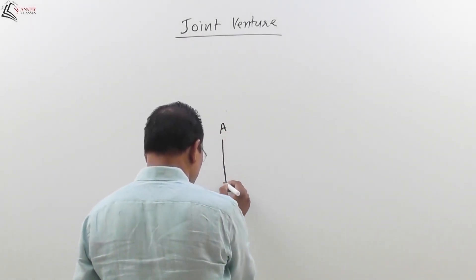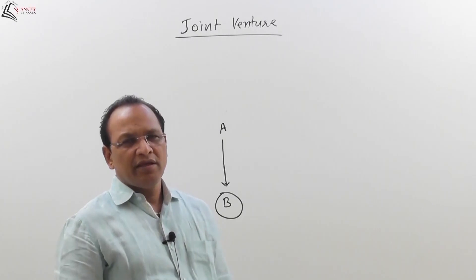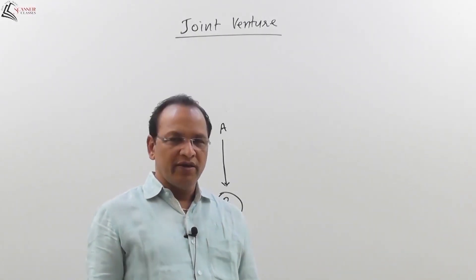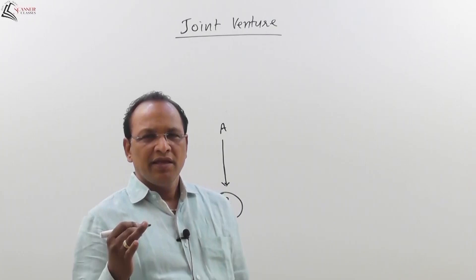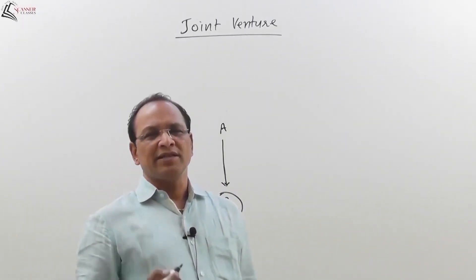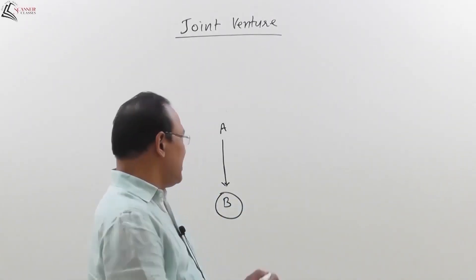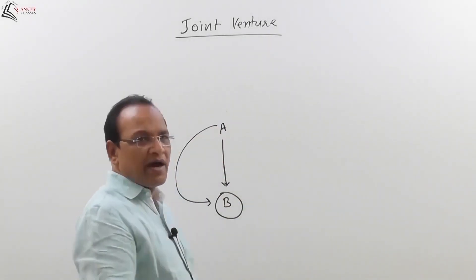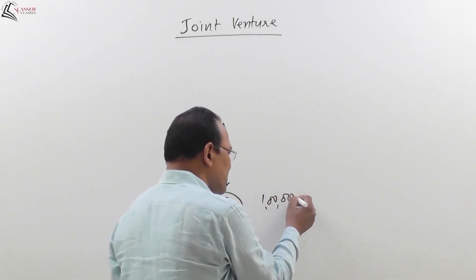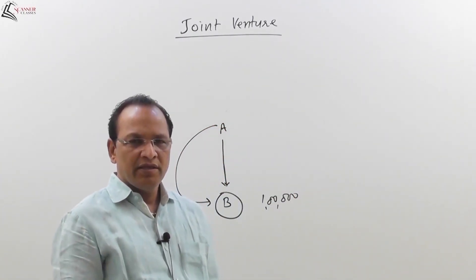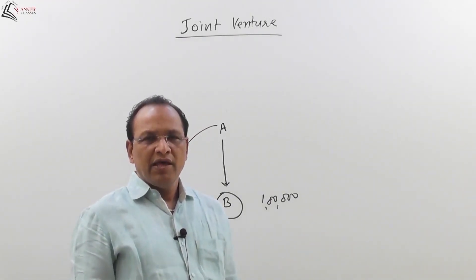Consider A and B entering a partnership. B has all sorts of doubts — will the business run or not, will there be profit or not? A reassures B and gives a guarantee that B will receive a minimum share of profit of one lakh rupees. A gives B the guarantee: 'You will get a minimum of 1 lakh profit.'